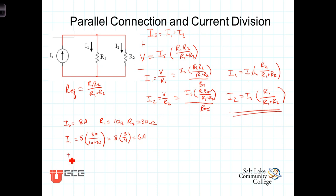And I2 will be similarly calculated, 8 times 10 over 10 plus 30, equals 8 times 1 fourth, which equals 2 amps.